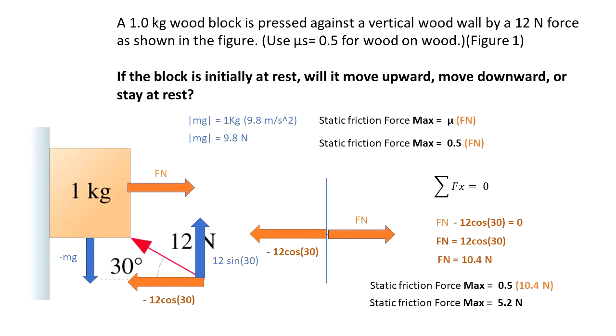Now we have the normal force. With this information, we can calculate the fs max. I'm going to plug in the normal force into mu fn. And we get that fs max is equal to 5.2 N.